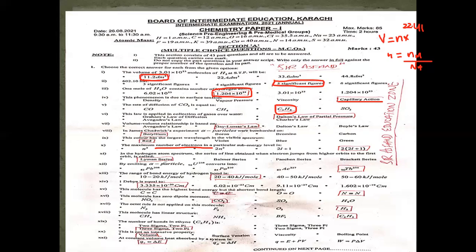If Uranium-92, mass 238 emits an alpha particle with atomic number 2 and mass number 4, then the resulting element has atomic number 90 and mass number 234.